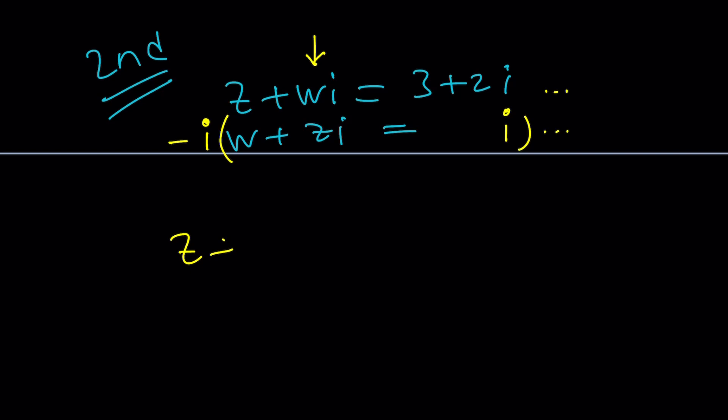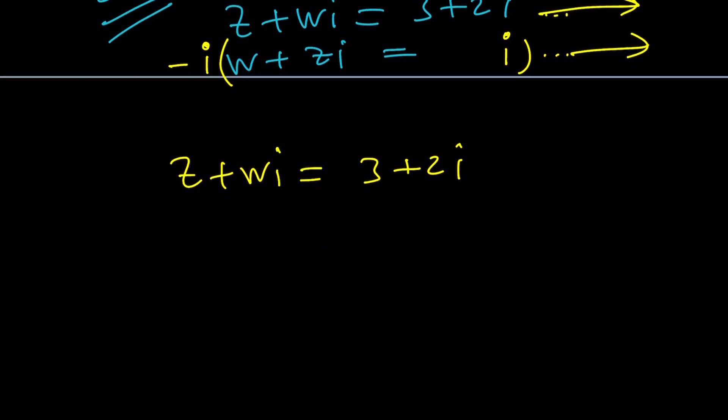So, now, let's rewrite these equations. z plus wi equals 3 plus 2i. Normally, I would do it like this. I put it on the side, but I don't have room, and I'm too lazy to erase everything. So, this gives us negative iw minus zi squared equals negative i squared. But wait a minute. i squared is negative 1. Turn this into 1. Turn this into plus z. That's a plus z.